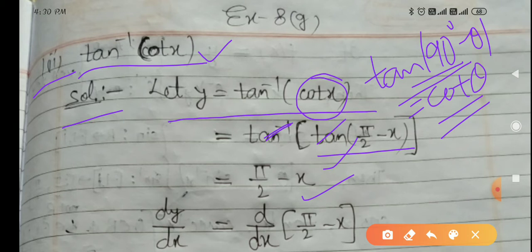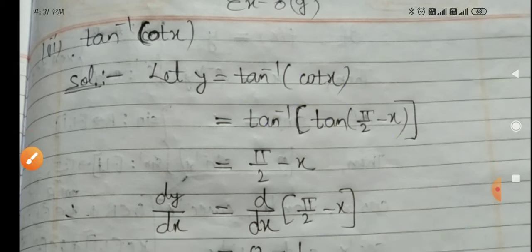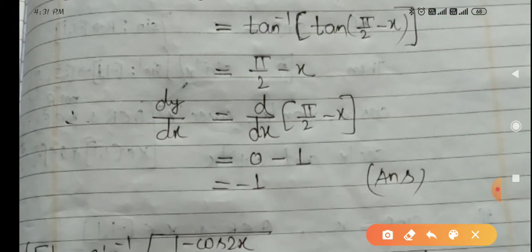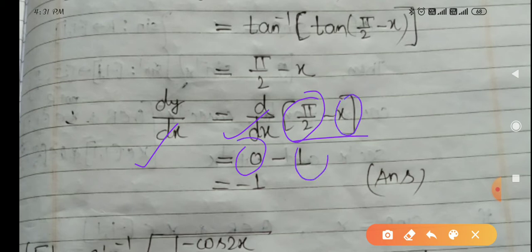The given expression was tan inverse cot x, and after simplification it becomes pi by 2 minus x. Now it is easy to differentiate: dy/dx equals d/dx of (pi by 2 minus x). Differentiation of pi by 2 is 0, differentiation of x is 1, so the final answer is minus 1.